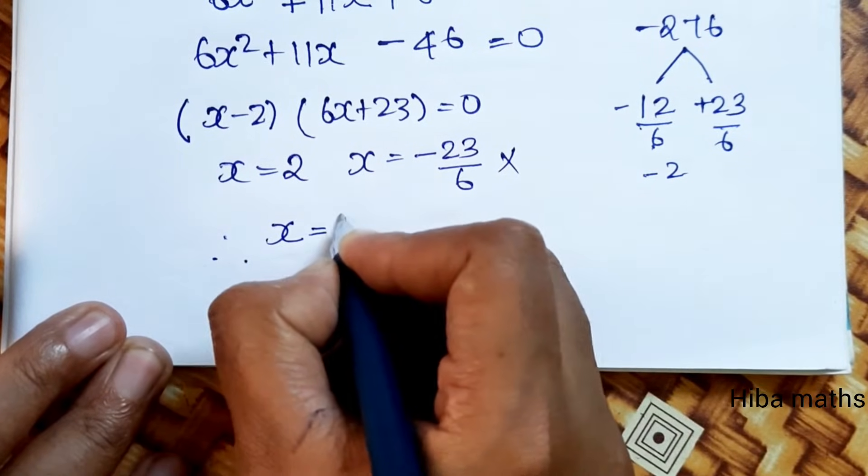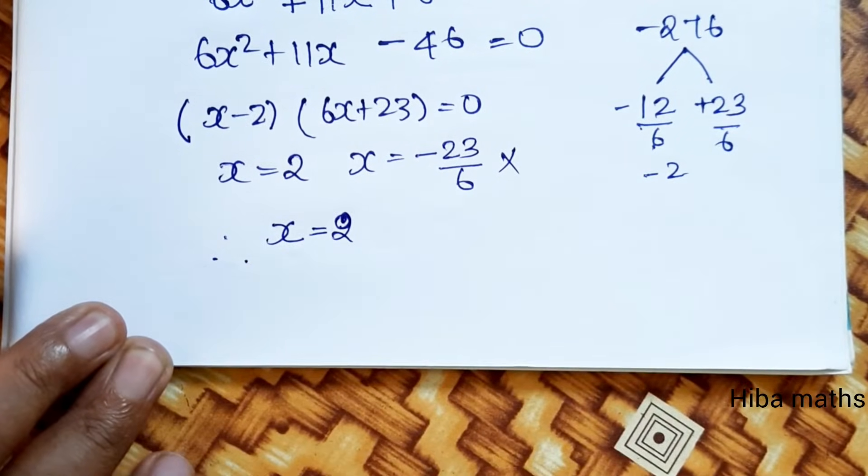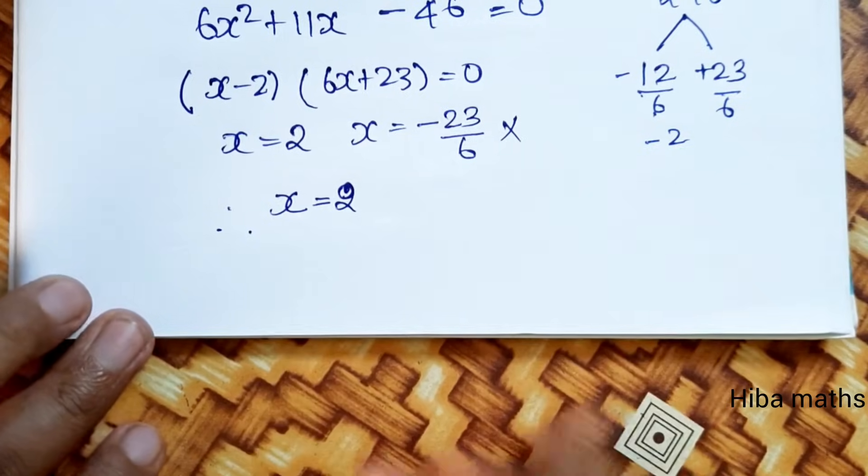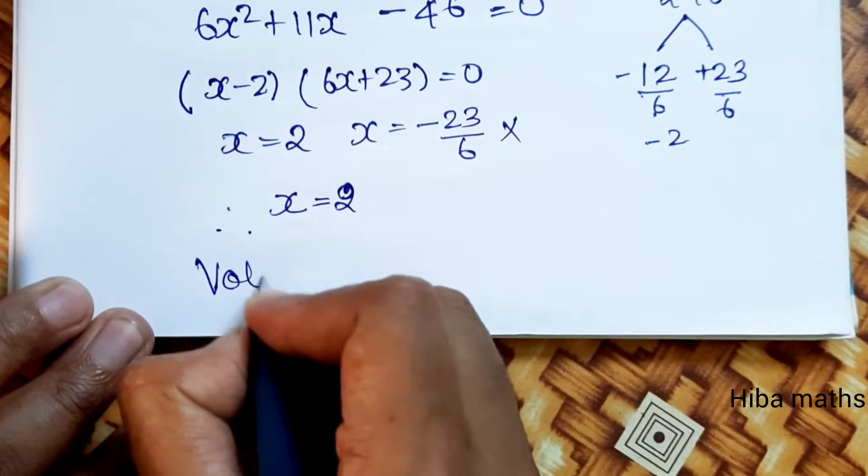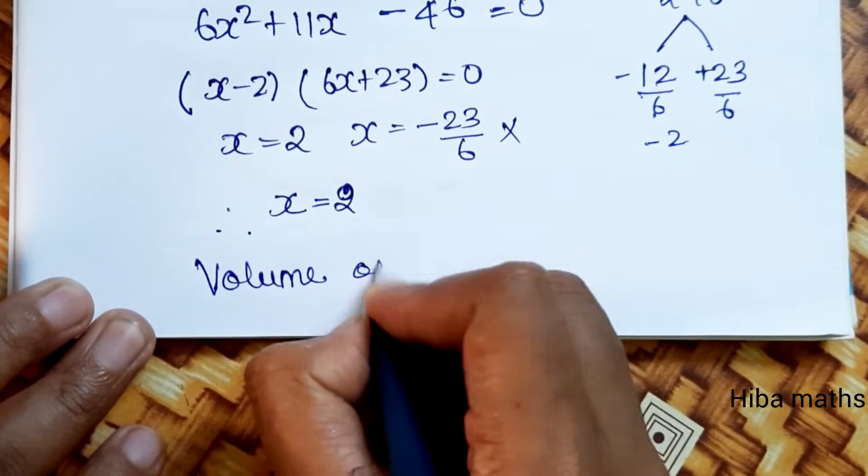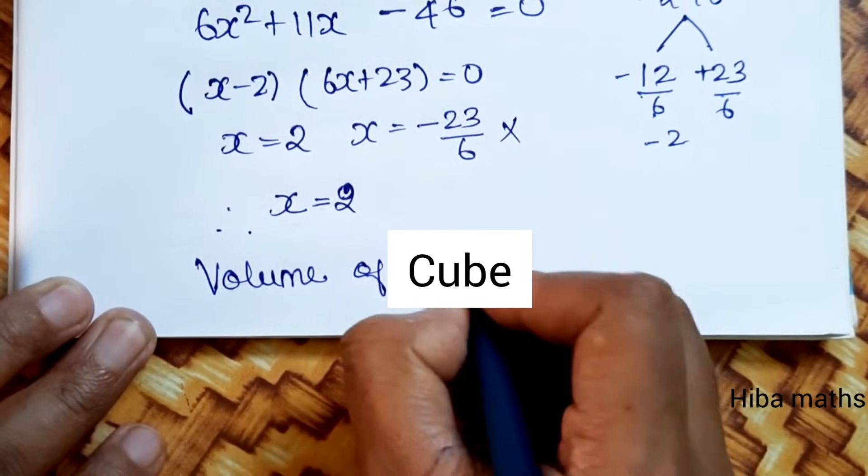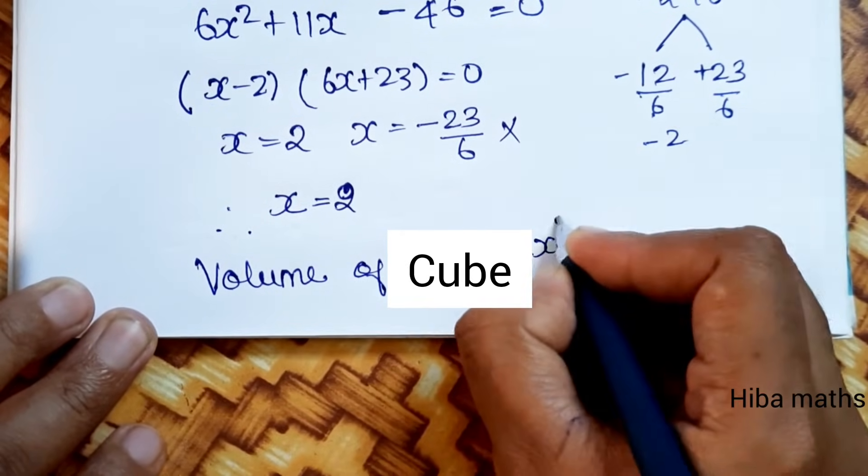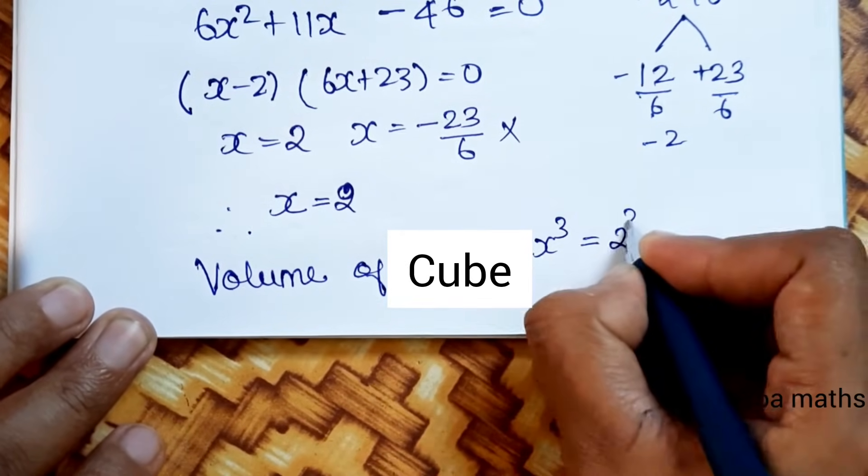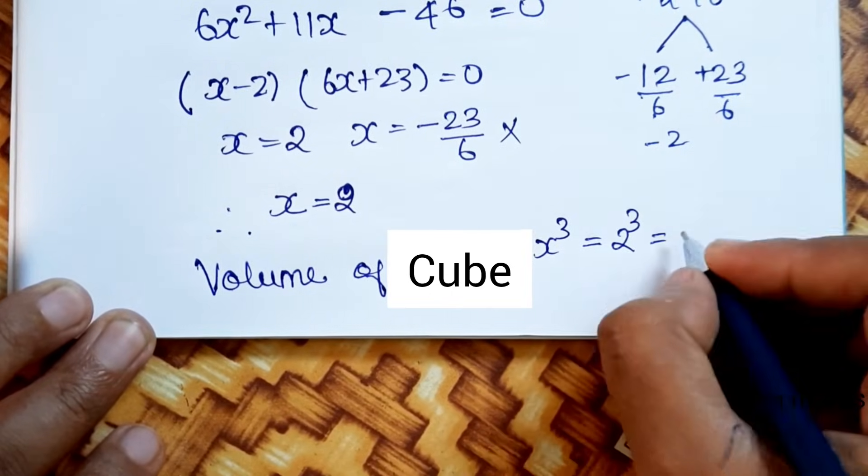x equals 2. Volume of cube is 2 to the power 3. 2 times 2 is 4, 4 times 2 is 8.